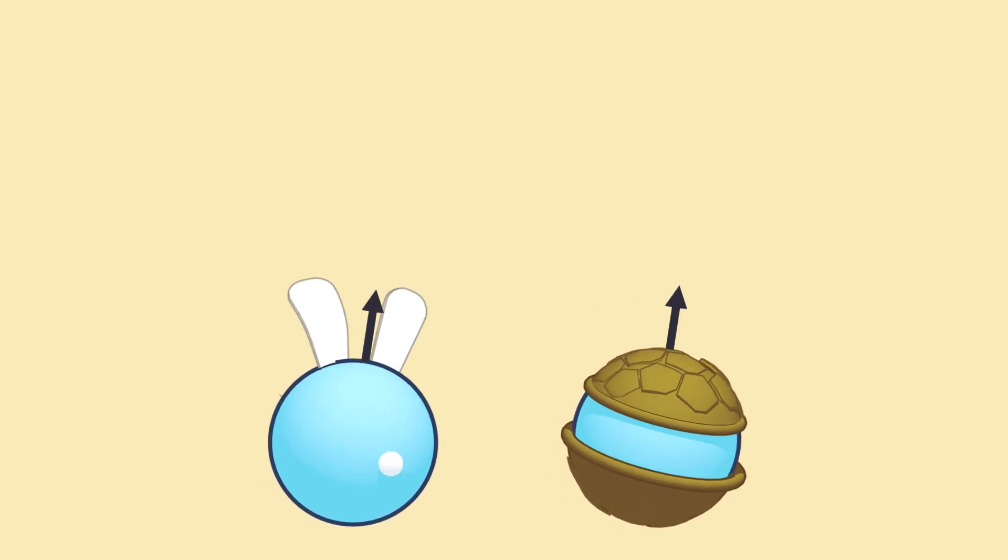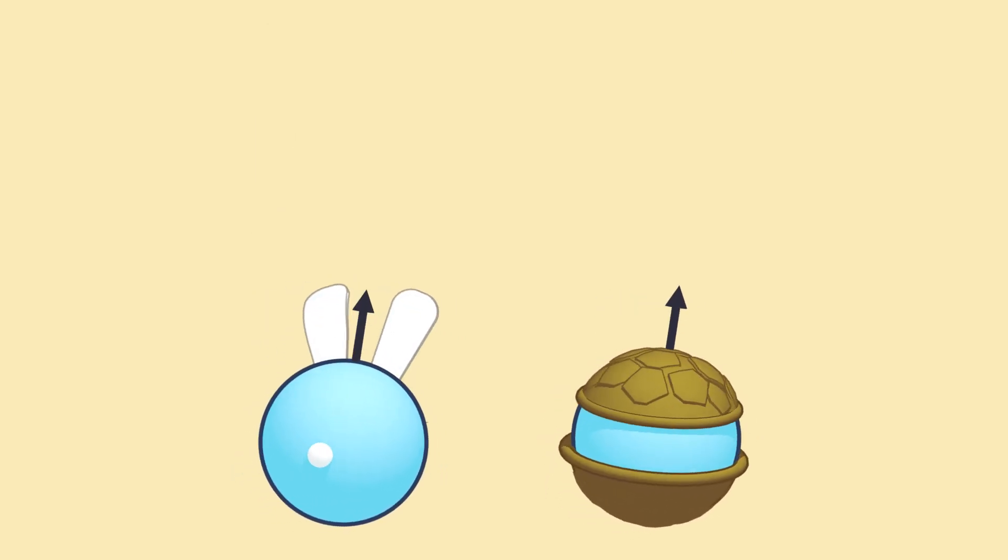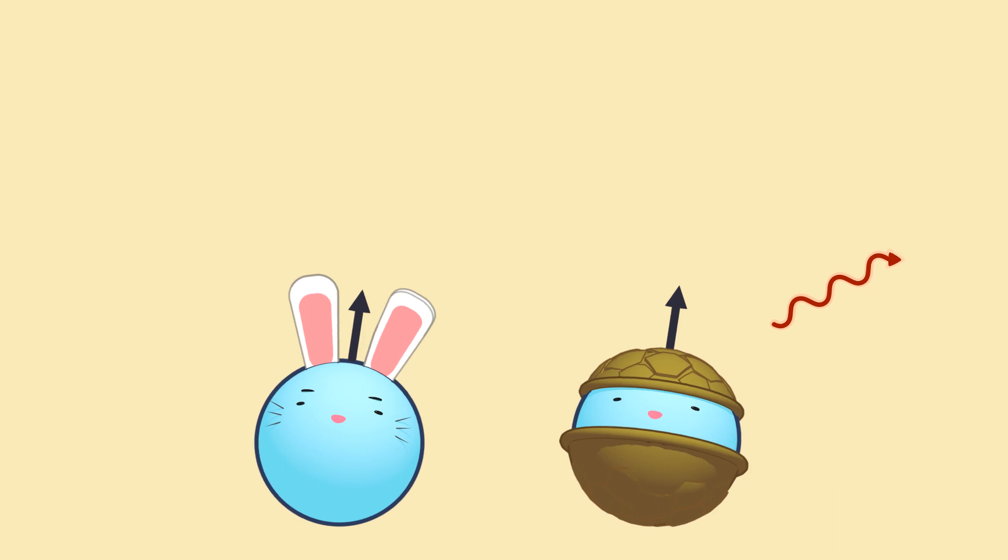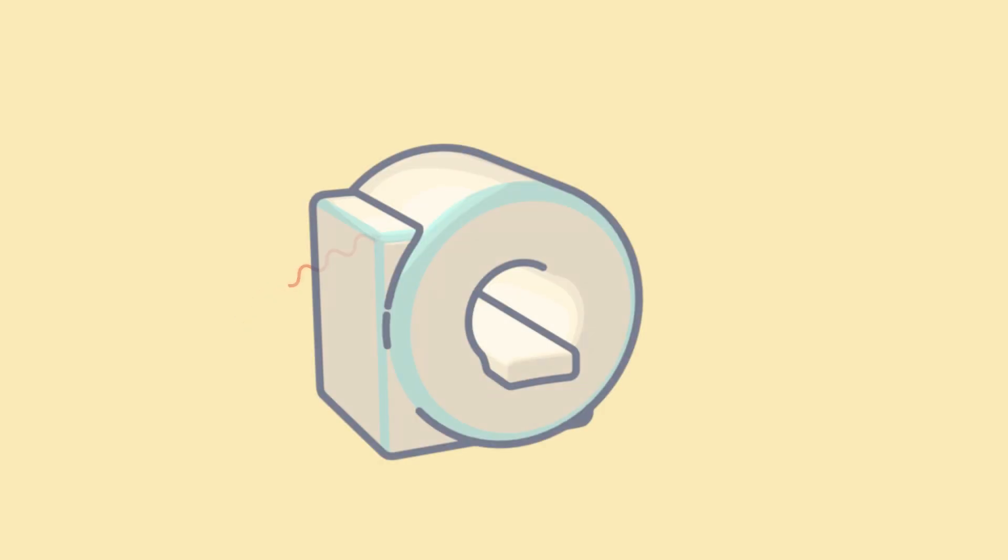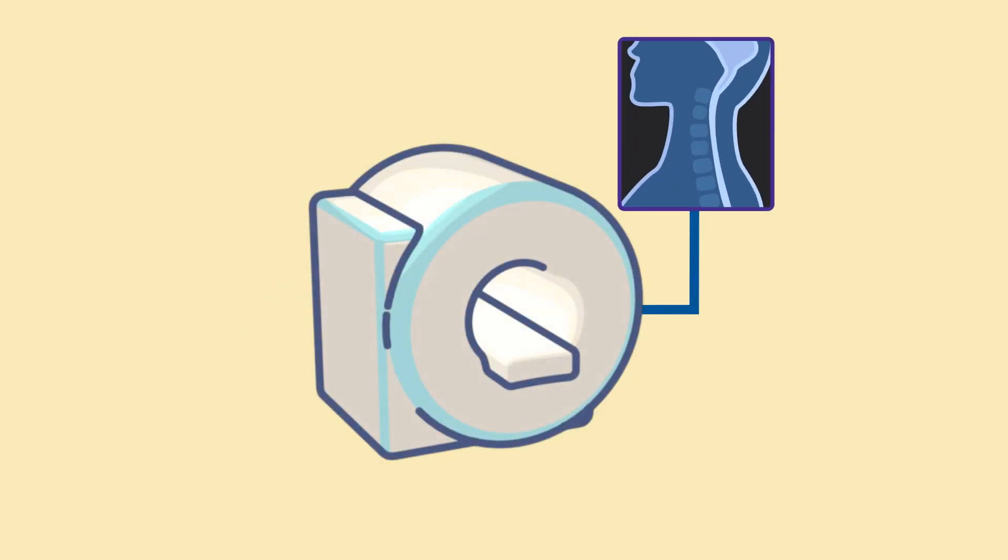When the proton precession syncs up following the 180-degree pulse, more energy is released back into the system. This is called an echo, and it is the information collected by the MR scanner, which will eventually generate a medical image.